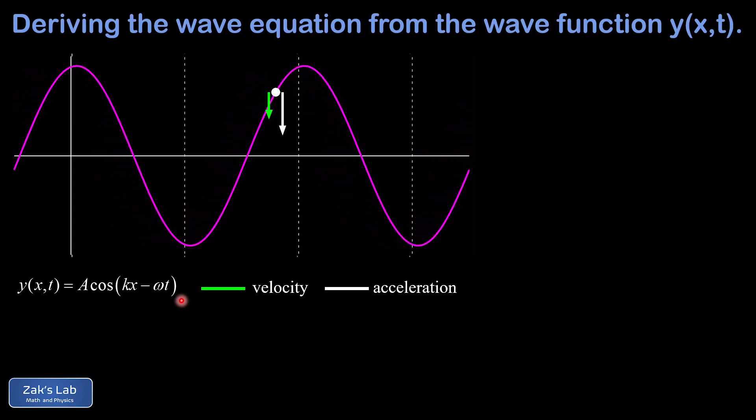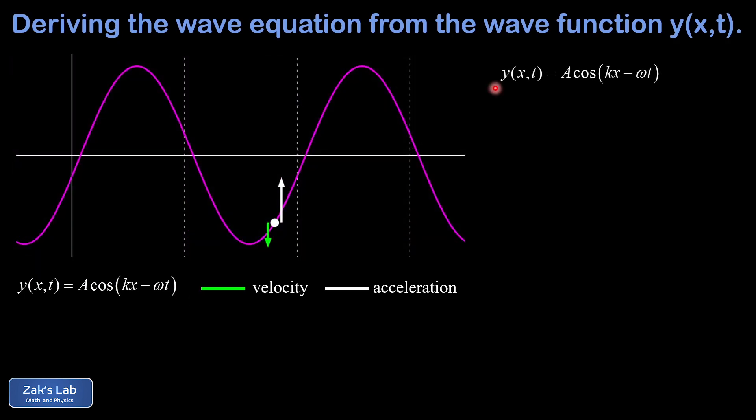We freeze the animation at some arbitrary time. We start with our wave function y of x and t equals a cosine of kx minus omega t, and we want the rate of change in y with respect to time while holding x constant. This is the time derivative with x considered a constant, called a partial derivative, written with a stylized d sometimes pronounced as del. So our y velocity is del y del t. The derivative of cosine gives a negative sine, the chain rule adds a factor of negative omega, and the minus signs cancel, giving us a omega sine kx minus omega t for our velocity function.